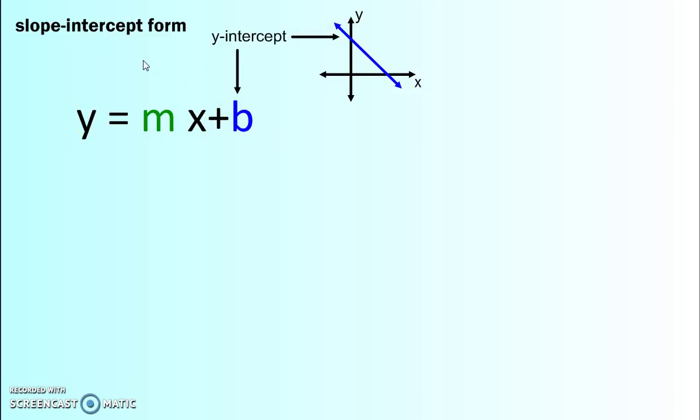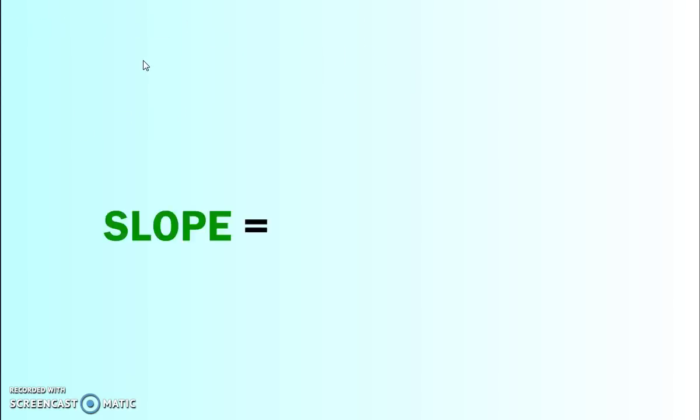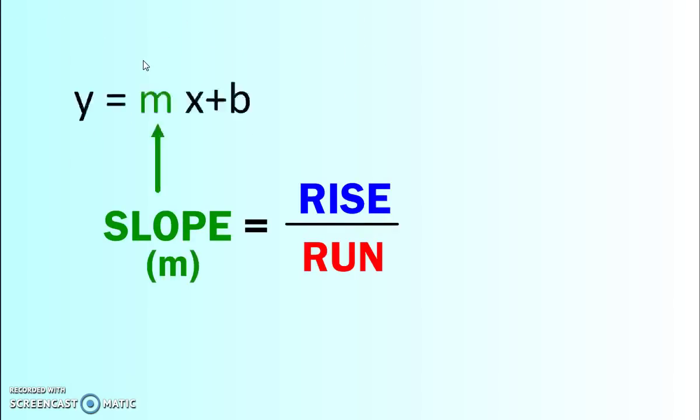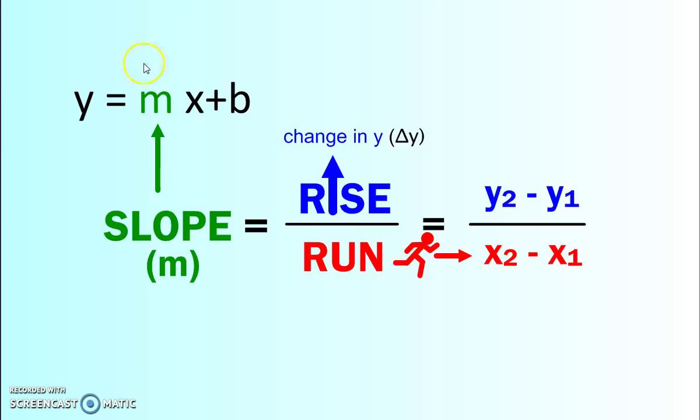Now you're going to learn that slope equals rise over run. m is the slope. Rise is the change in y, subtract points 2 and 1. Run through the horizontal plane is the change in x.